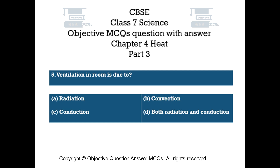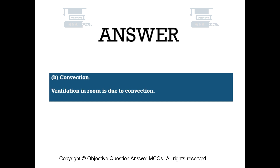Question number 5. Ventilation in a room is due to: Option A radiation, Option B convection, Option C conduction, Option D both radiation and conduction. The right answer is Option B — convection. Ventilation in a room is due to convection.